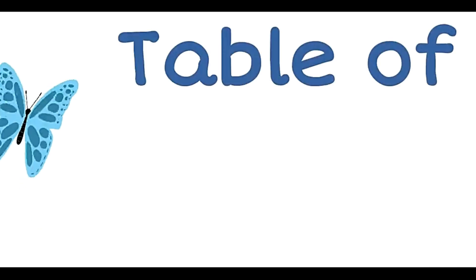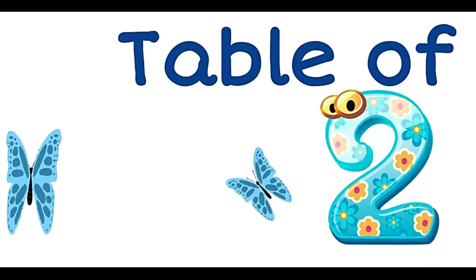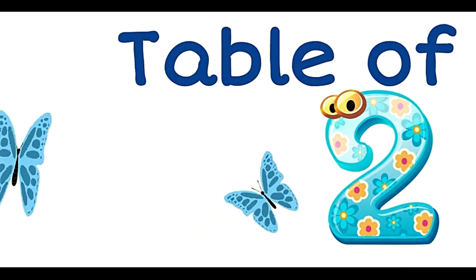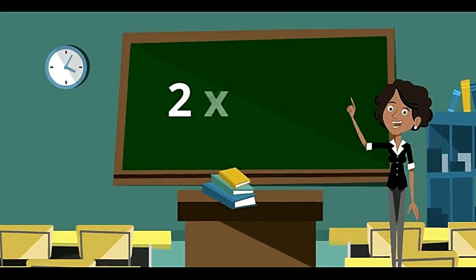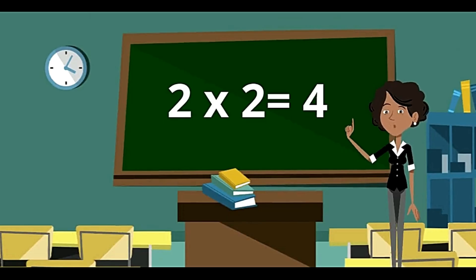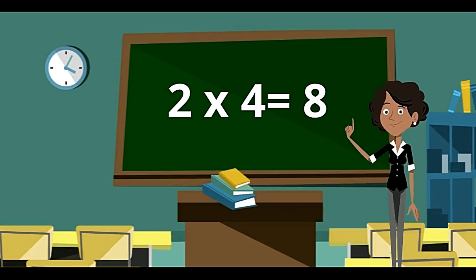Now, we will be learning table of 2. 2 ones are 2. 2 twos are 4. 2 threes are 6. 2 fours are 8.